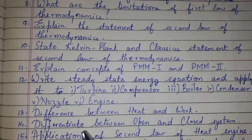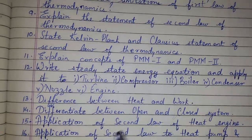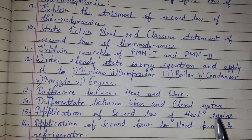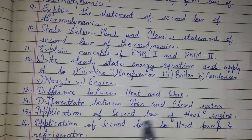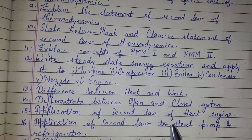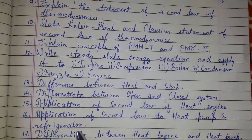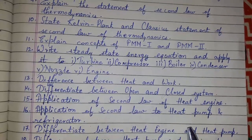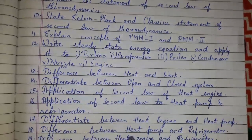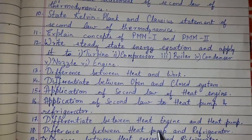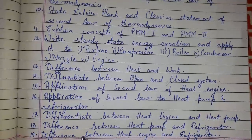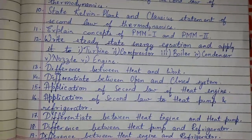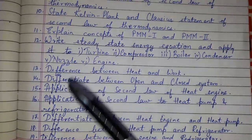Write the steady state energy equation and apply it to turbine, compressor, boiler, condenser, nozzle, and engine. Differentiate between heat and work. Differentiate between open and closed systems. Application of the second law to heat engine, heat pump, and refrigerator. Differentiate between heat engine and heat pump, and between heat pump and refrigerator.